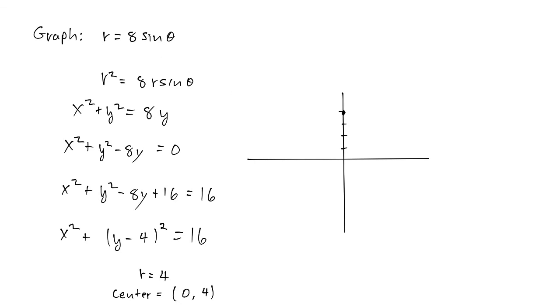Now, whenever you have something like this, you're always going to have a circle that goes through the origin. It's going to be centered on one of the axes. So it's going to go through the origin. That makes sense. The radius is 4. And then it's a circle.